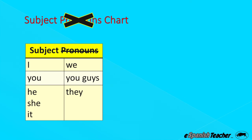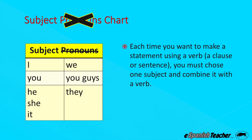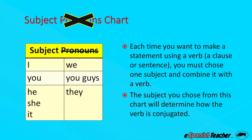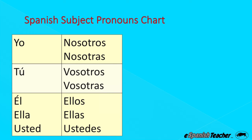Here's the subject pronoun chart. You're very familiar with it in English, so let me skip past that and emphasize one thing. Each time you want to make a statement that includes a verb — a clause or a sentence — you absolutely must pair that verb with a subject. Subject and verb are absolutely linked at the hip. The subject you choose will determine how the verb is conjugated. You've got to conjugate based on the subject that you choose. Here is the Spanish subject chart. You're somewhat familiar with these already. There are also other subjects, so you're not just limited to what's in the subject chart.